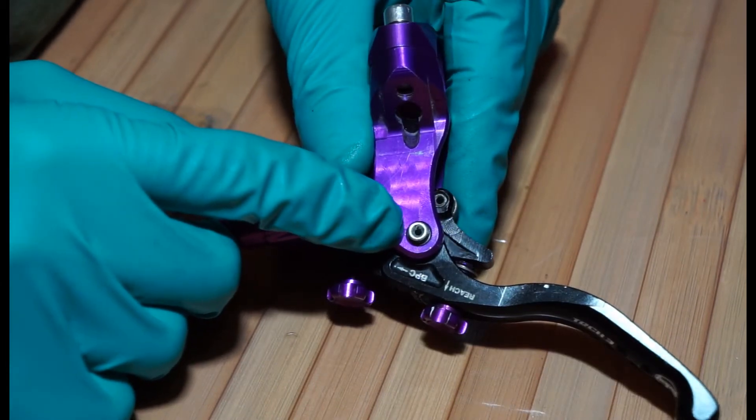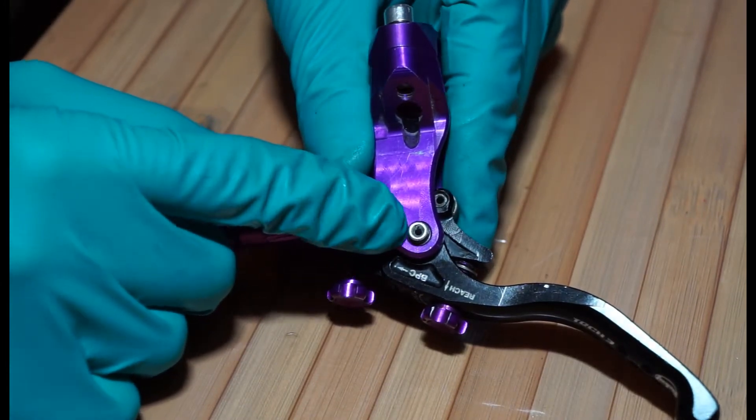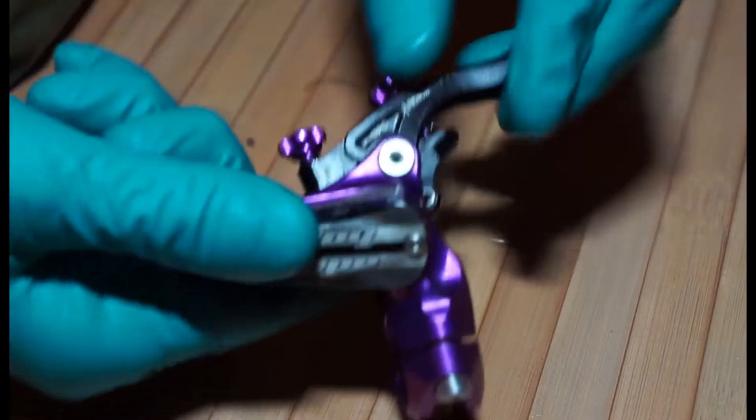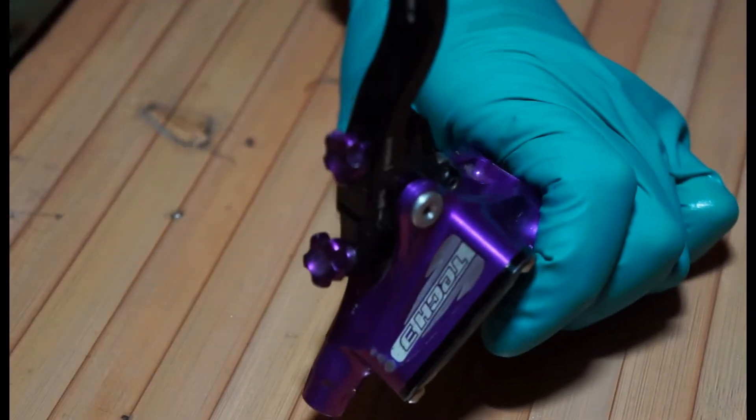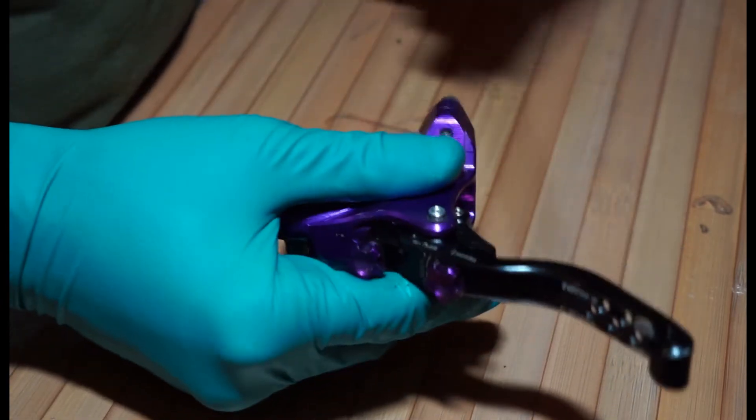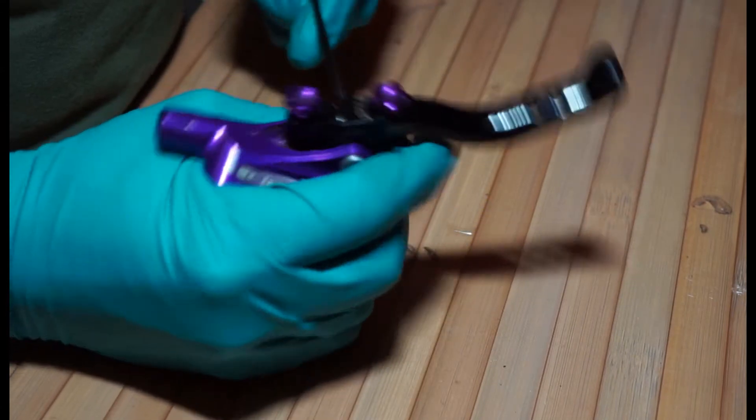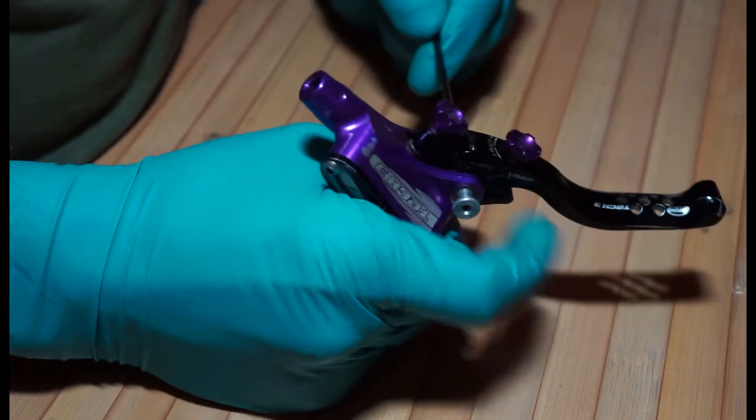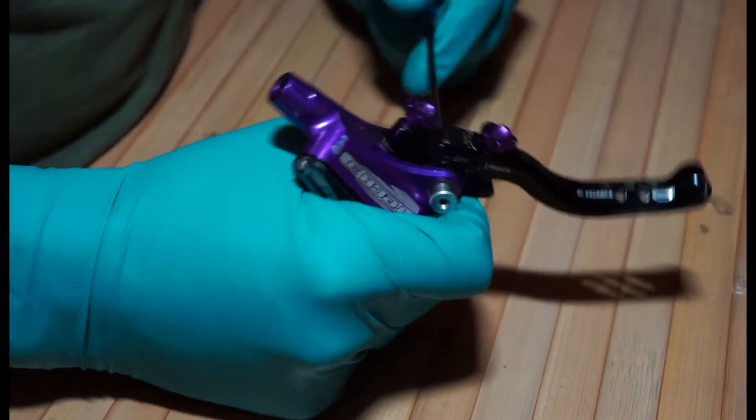Then we're going to get an allen key, or a prod pusher, anything. And we're going to push this pivot through. It's kind of easier said than done. It does get stuck quite easily. I'm just going to grab an allen key and push on here.